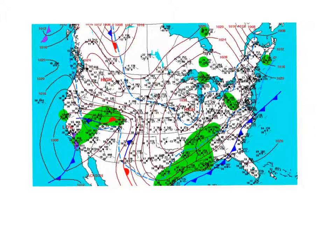Up here, where there is a high, you can see there is no precipitation. Again, where there is a high, there is also no precipitation. Down here, where there is a low, there is precipitation, because lows create precipitation. Thank you.